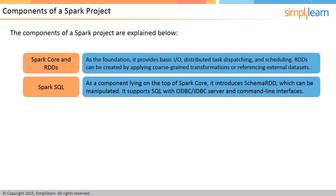Spark SQL is a component lying on the top of Spark Core. It introduces Schema RDD, which is a new data abstraction and supports semi-structured and structured data. This abstraction can be manipulated in Java, Scala, and Python by the Spark SQL-provided domain-specific language. In addition, Spark SQL supports SQL with ODBC, JDBC server, and command-line interfaces.